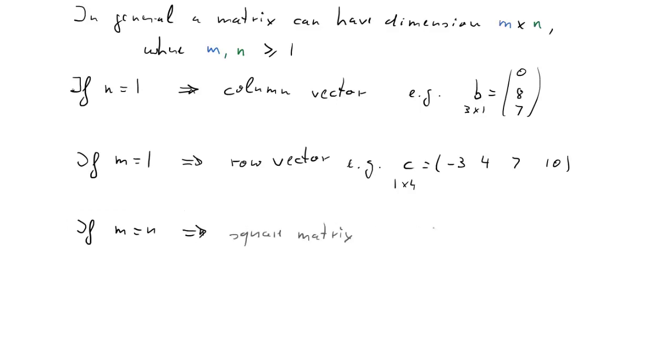If m is equal to n, then we call the result a square matrix. So here's an example of a 3 by 3 square matrix.